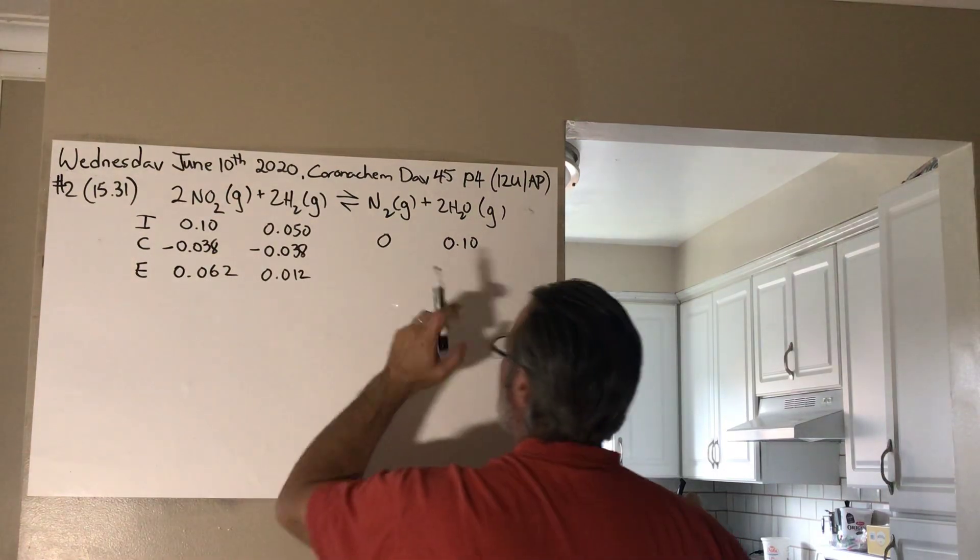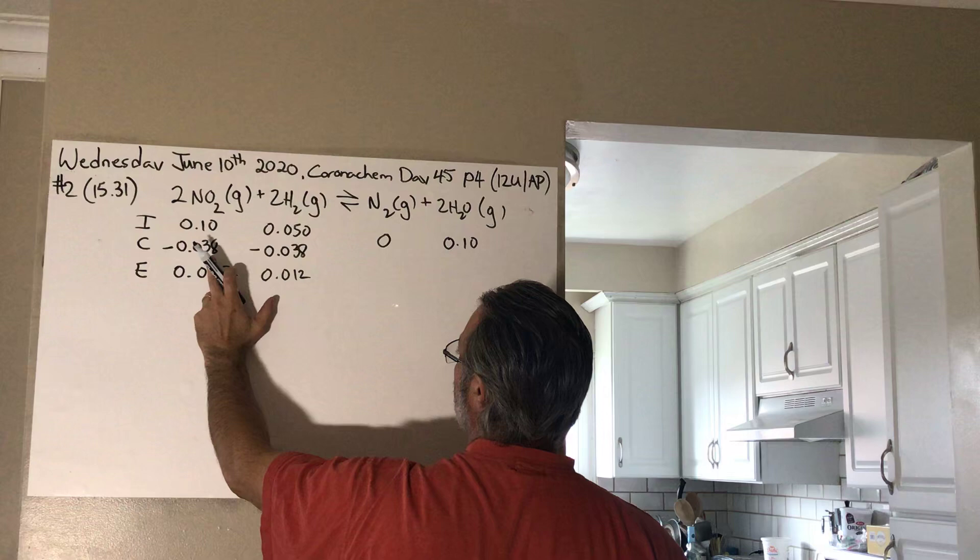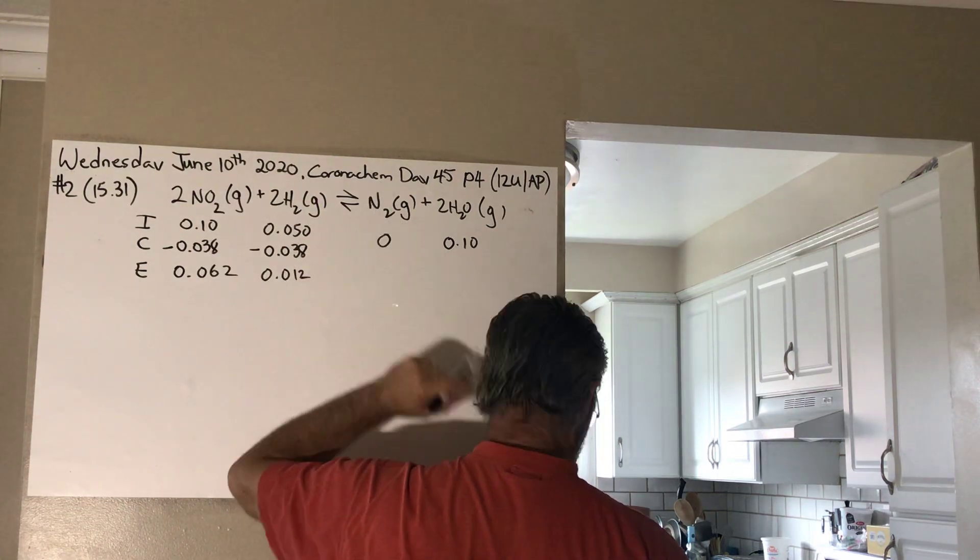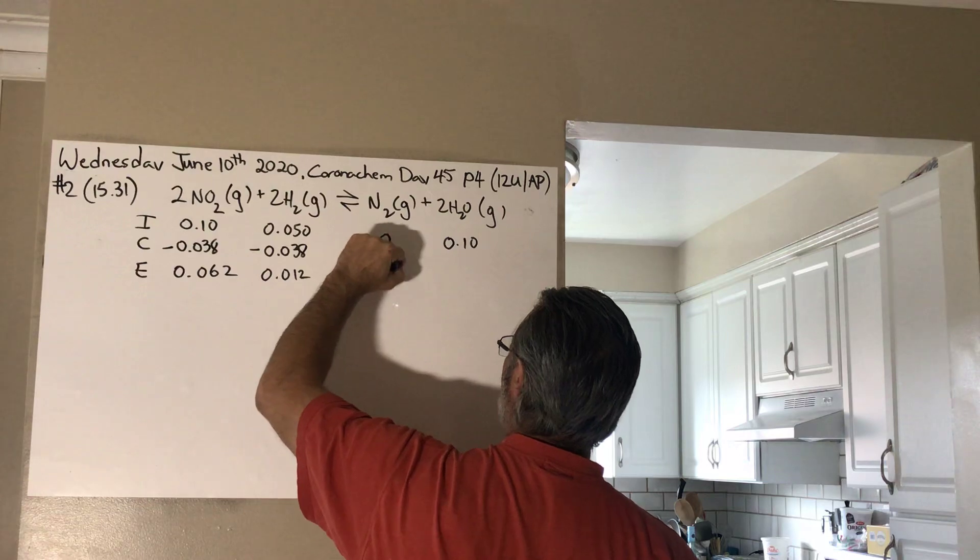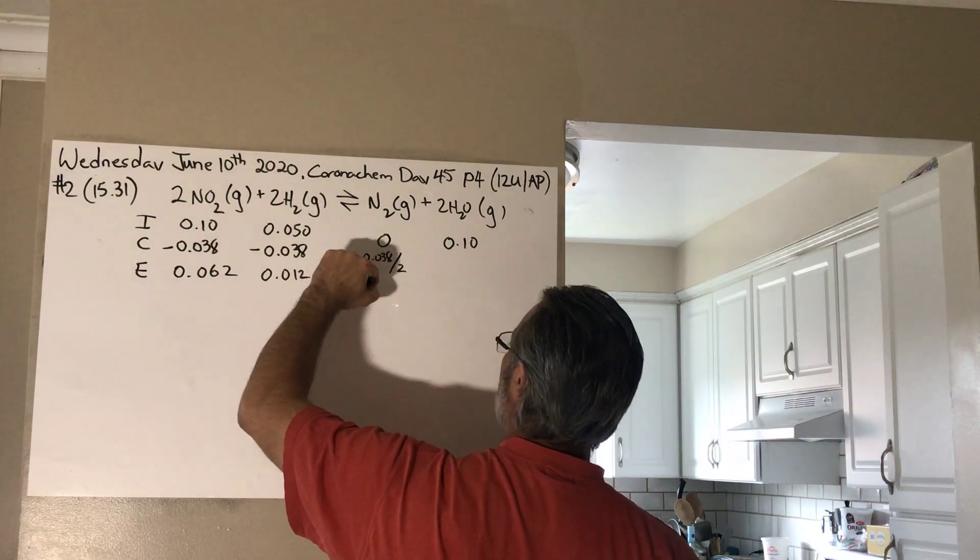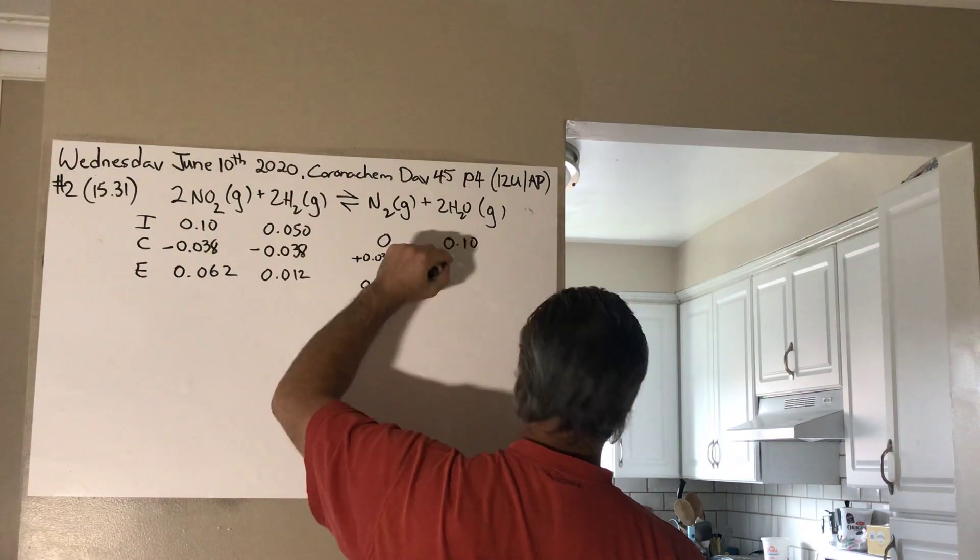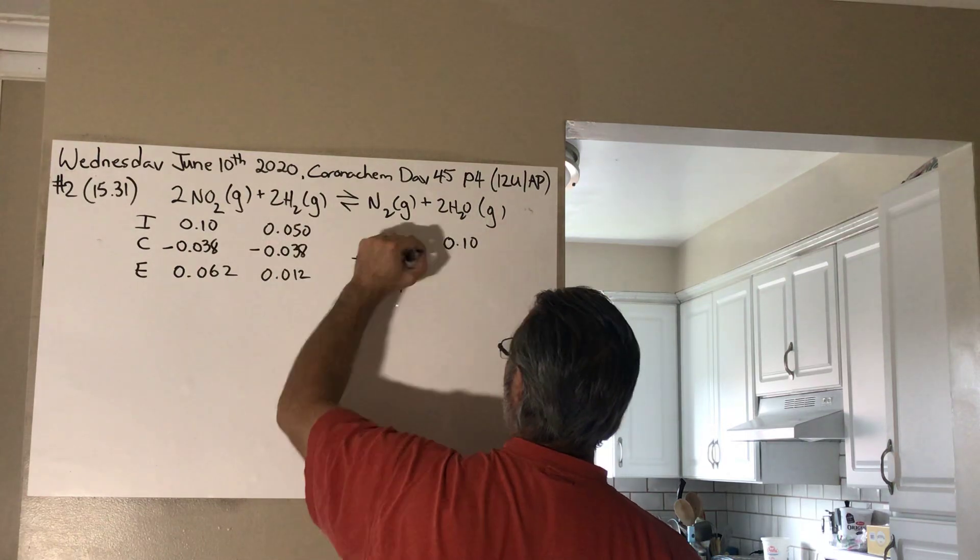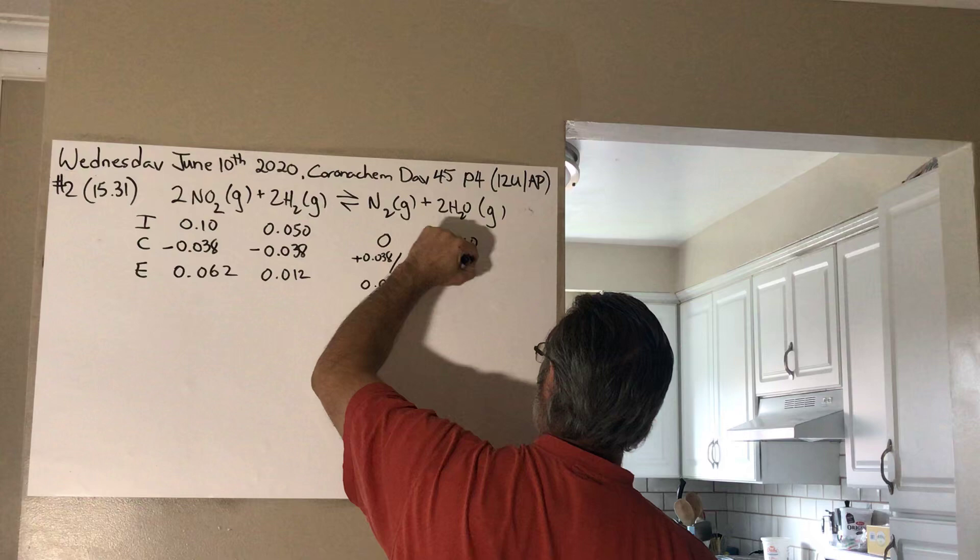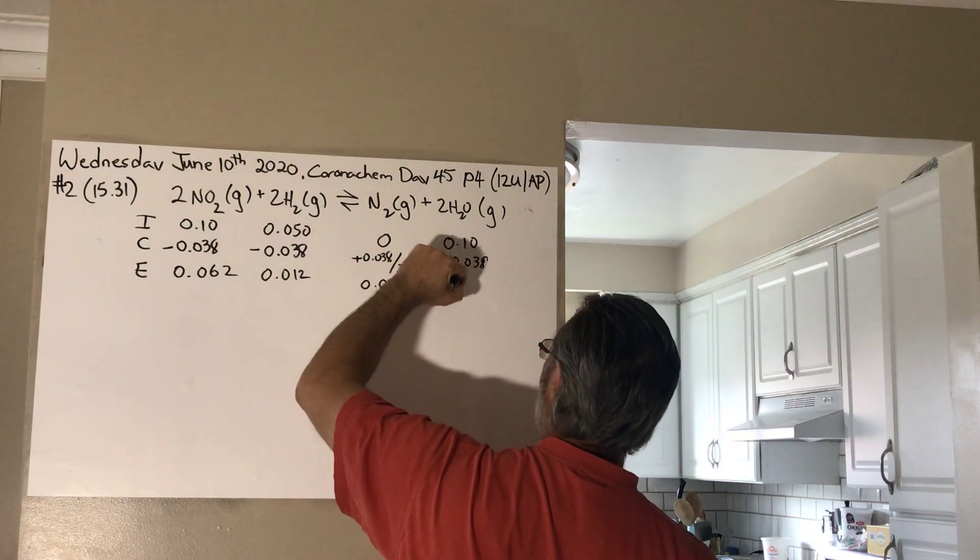This one is going to gain half as much as 0.038, because the stoichiometry here is 2 to 1. So, it's going to be plus 0.038 over 2, which gives you 0.019. And this one is going to gain the same amount, because it's a 2 to 2 stoichiometry. So, this is plus 0.038. This one ends up being 0.138.